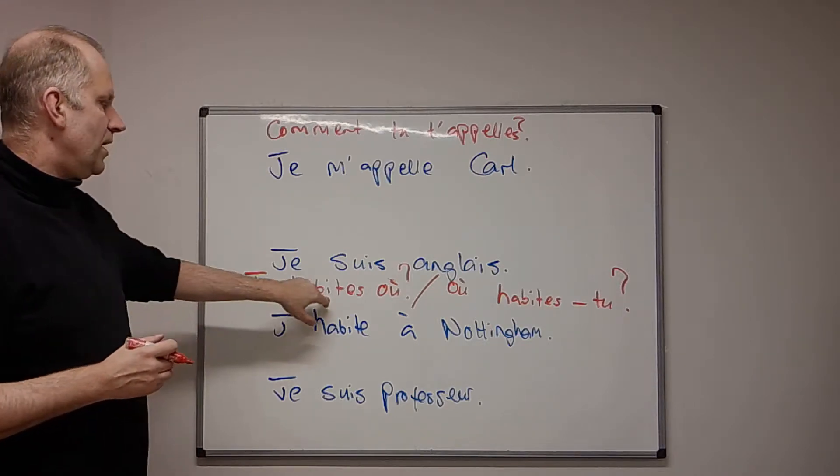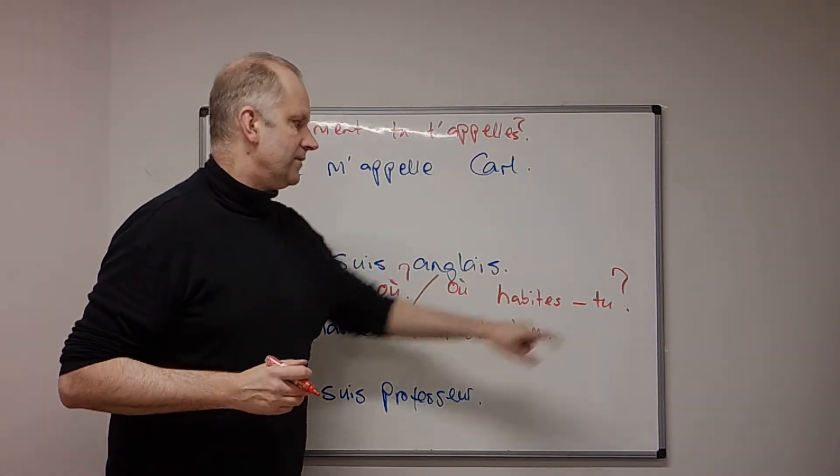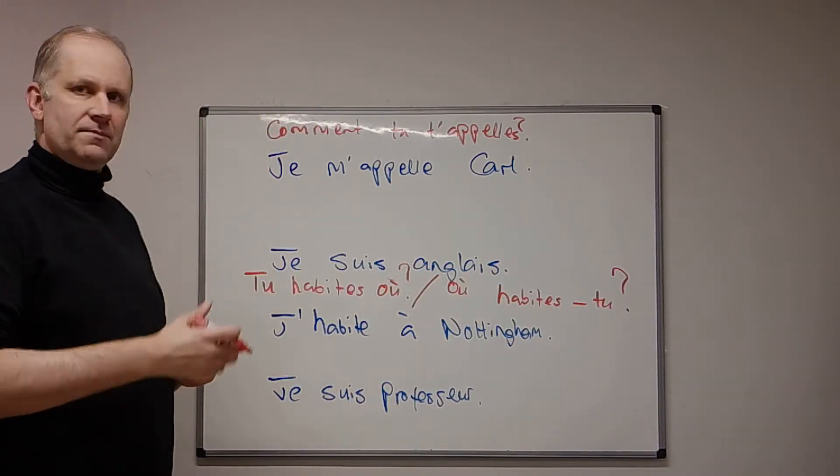So, tu habite où? You live where? Or, où habites-tu? Also, when you put the verb first, you have to put a little hyphen between the verb and the subject.